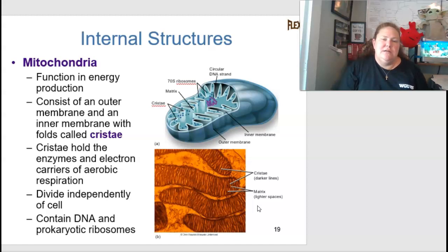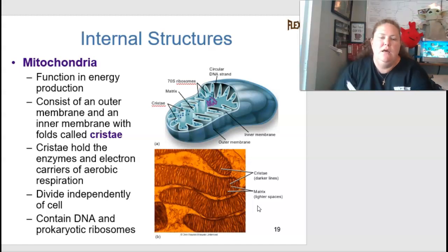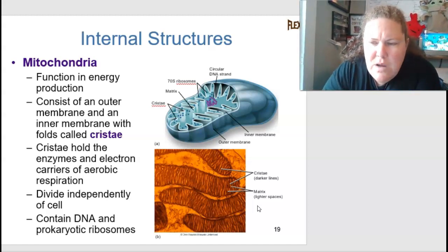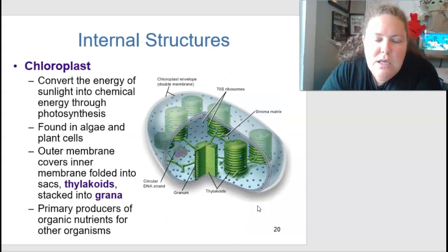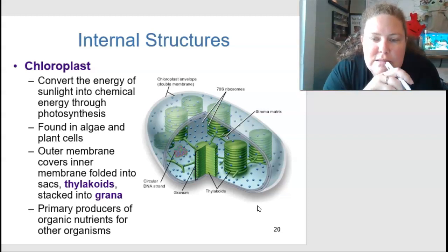Mitochondria are the powerhouse of the cell, functioning in energy production. They consist of an outer membrane and an inner membrane with folds called cristae, which hold the enzymes and electron carriers of aerobic respiration. Mitochondria divide independently of the cell and contain their own DNA and prokaryotic-type ribosomes. This is where we make the majority of our ATP in aerobic metabolism.